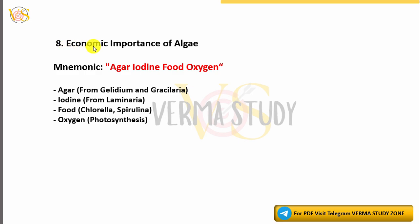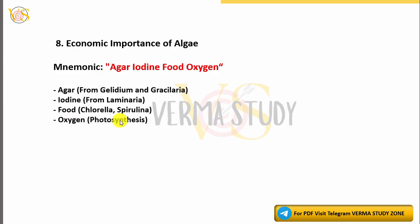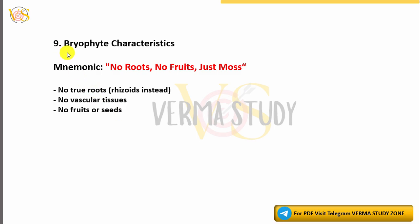8. Economic Importance of Algae Mnemonic: 'Agar, Iodine, Food, Oxygen.' Agar from Gelidium and Gracilaria. Iodine from Laminaria. Food from Chlorella and Spirulina. Oxygen through Photosynthesis.